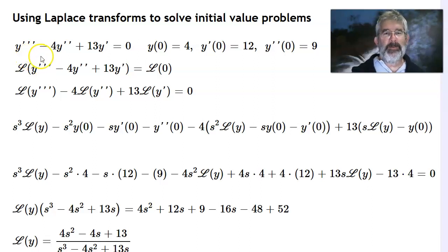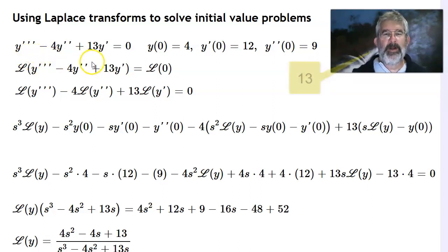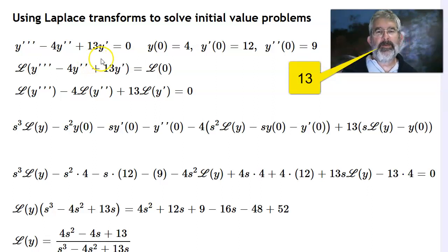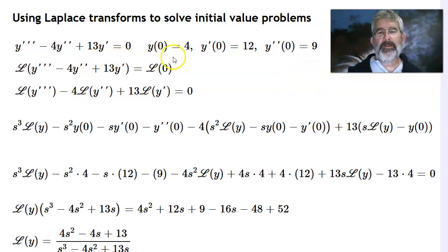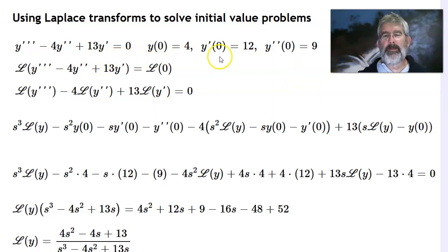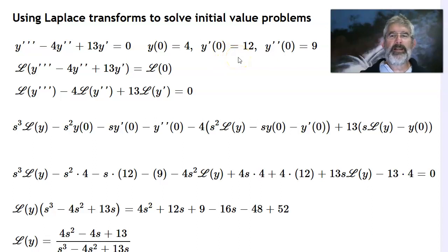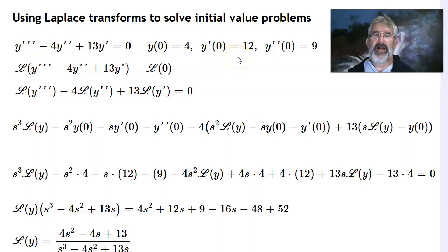I've got y triple prime minus 4y double prime plus 3y prime equals 0. Initial conditions: y of 0 is 4, y prime of 0 is 12, and y double prime of 0 is 9.